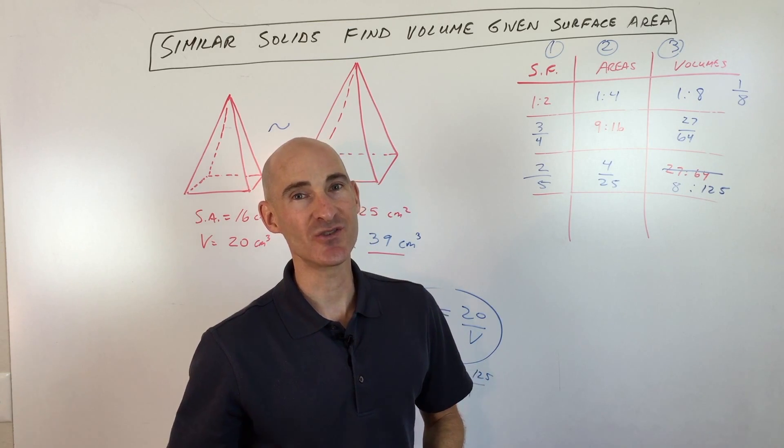Basically, figure out which dimension they're giving you — one, two, or three-dimensional — then work your way back to find the scale factor. Square it to find the ratio of the areas, or cube it to find the ratio of the volumes. I hope this helped you understand how to work with similar solids more easily and effectively. Subscribe to the channel, check out some of my past videos, and I'll look forward to seeing you in future ones.